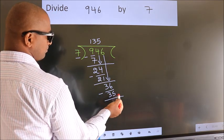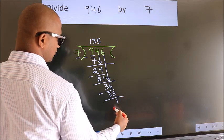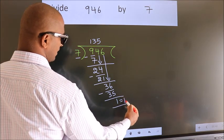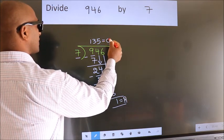No more numbers to bring it down. So we stop here. This is our remainder. This is our quotient.